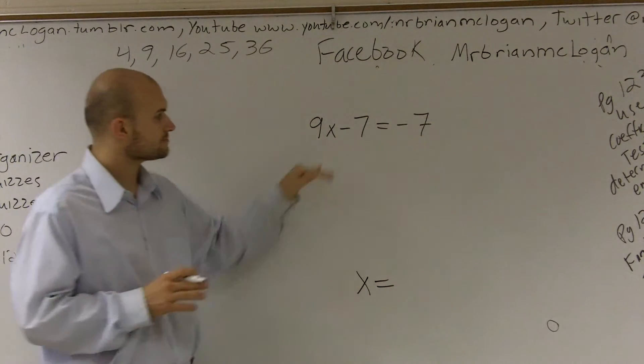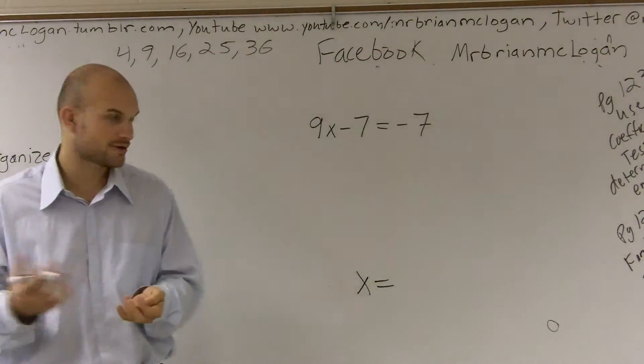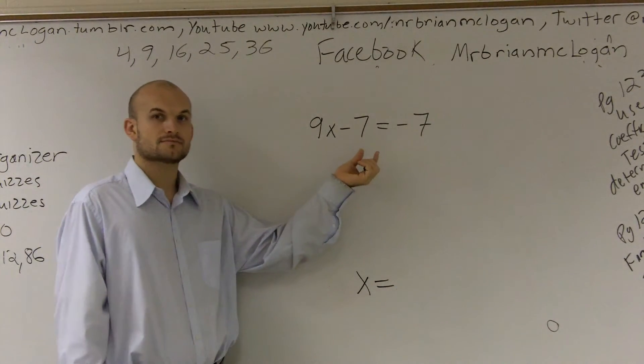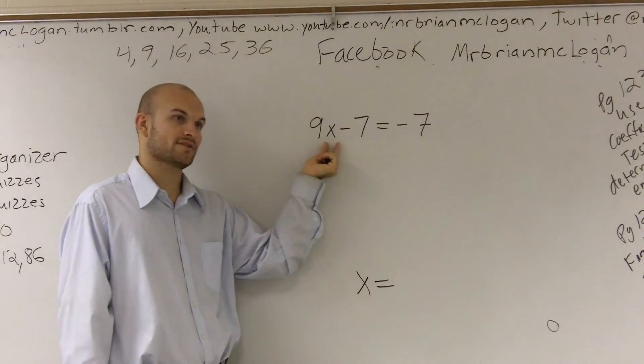So the first thing we need to do is we need to look at what is being added or subtracted to our variable. And here I have a negative 7. So what's happening is this 7 is being subtracted from my variable.